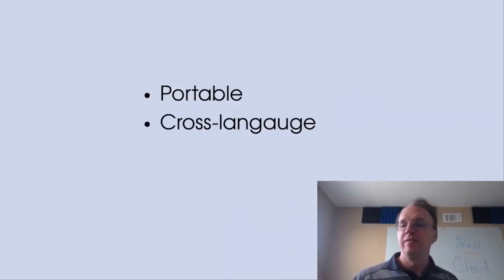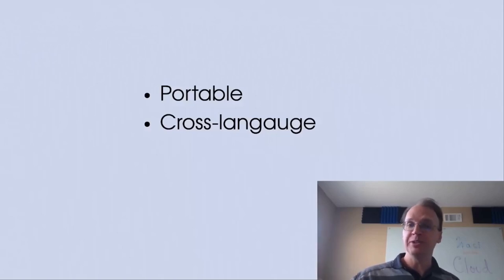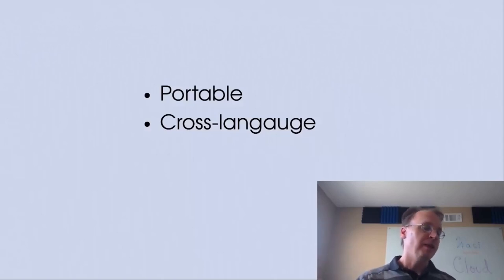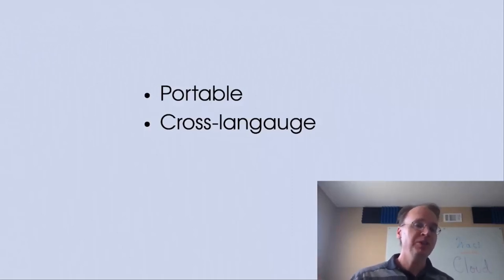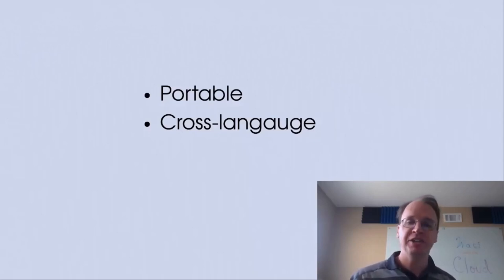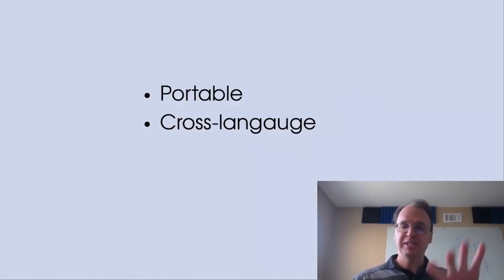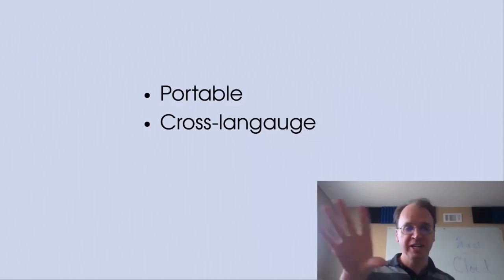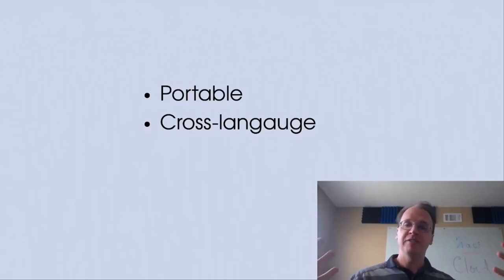Wasm is cross-language. It can support many different source languages today and is always adding features to support more languages in better ways. That's one of its core strengths. And when we look at the use cases for Wasm going forward, people want to use many different source languages — and really importantly, they want these different source languages to be able to interoperate. We want a common ecosystem where people can combine languages without fragmentation.